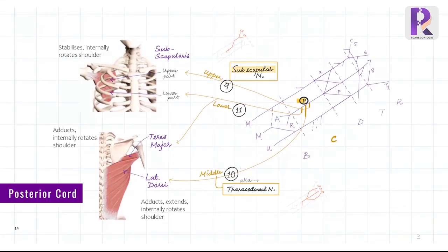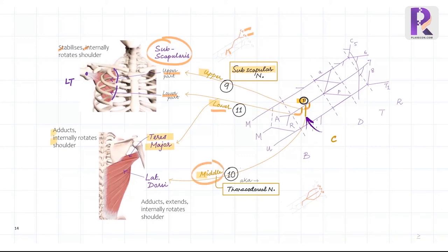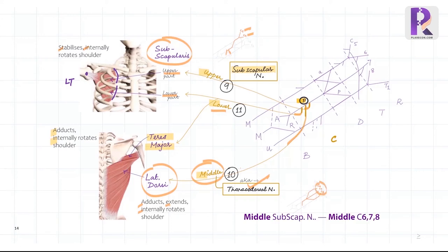Similarly, the posterior cord has three side branches: the upper, middle, and lower subscapular nerves. The upper and lower subscapular nerves supply the upper and lower portions of the subscapularis respectively — the only shoulder girdle muscle inserting onto the lesser tubercle of the humerus. Both originate from the upper C5, C6 nerve roots. The lower subscapular nerve additionally supplies teres major, which inserts onto the medial lip of the bicipital groove. The middle subscapular nerve, also called the thoracodorsal nerve, supplies the latissimus dorsi. All these muscles receive posterior division innervation, adduct the shoulder, but all internally rotate the shoulder. The middle subscapular originates from C6, C7, C8 nerve roots.